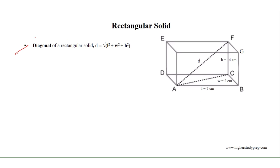The diagonal of a rectangular solid is equal to the square root of the sum of the square of the length, square of the width, and square of the height. Any rectangular surface has a diagonal which can be determined by applying the theorem of Pythagoras.